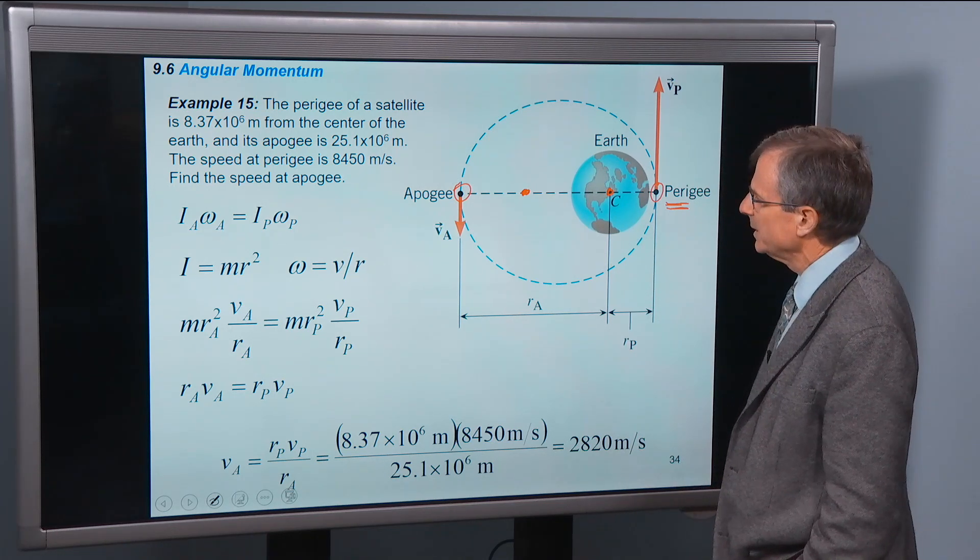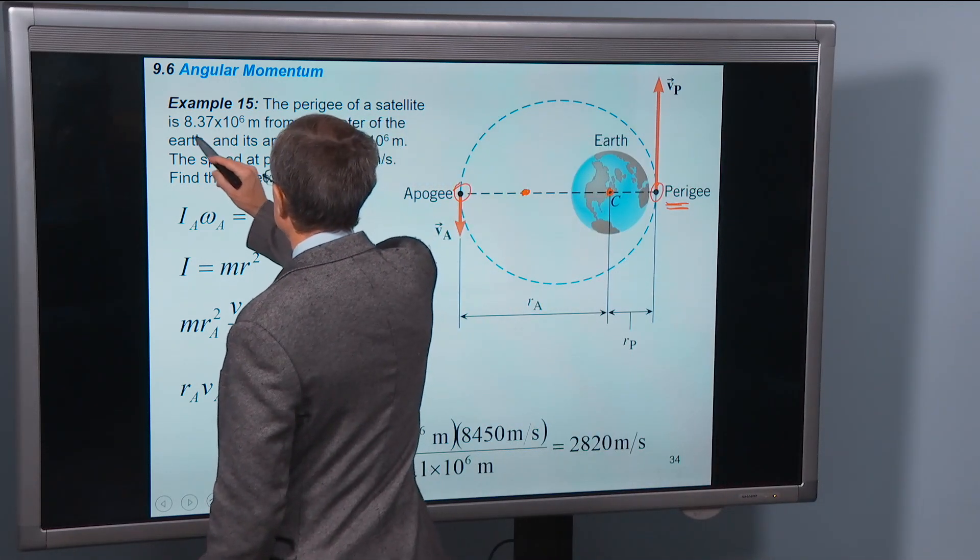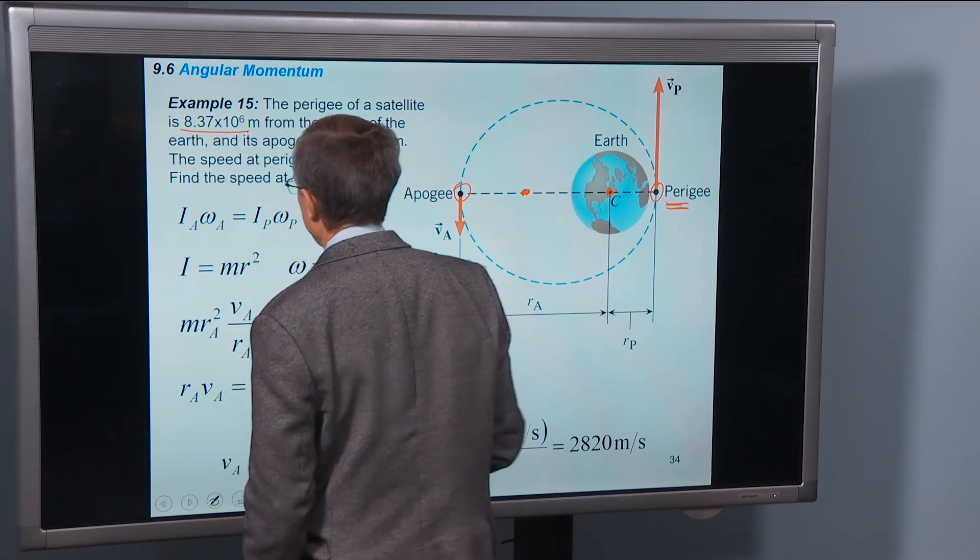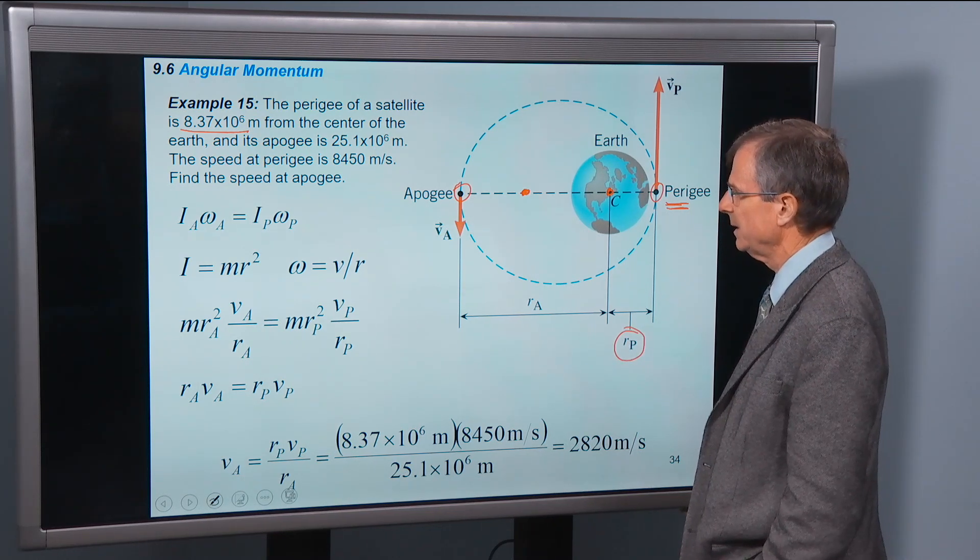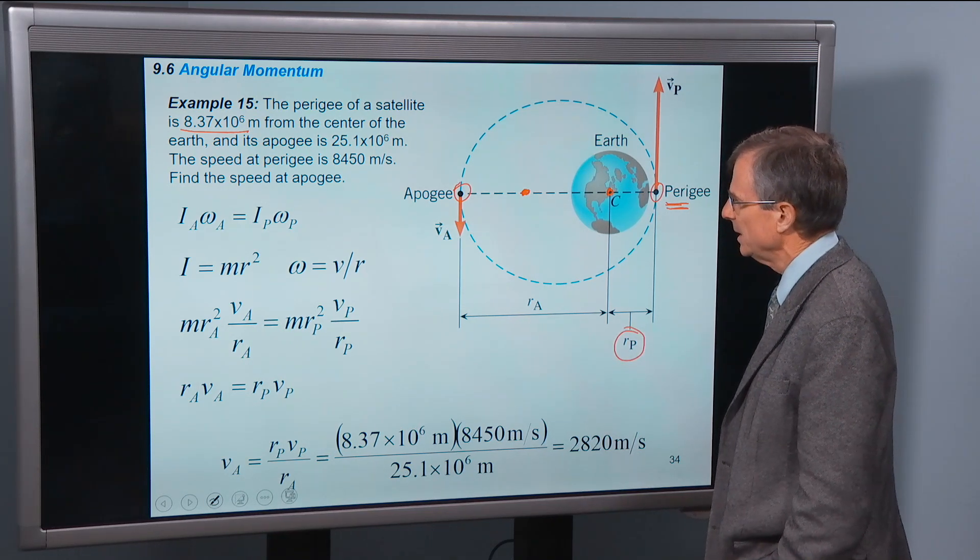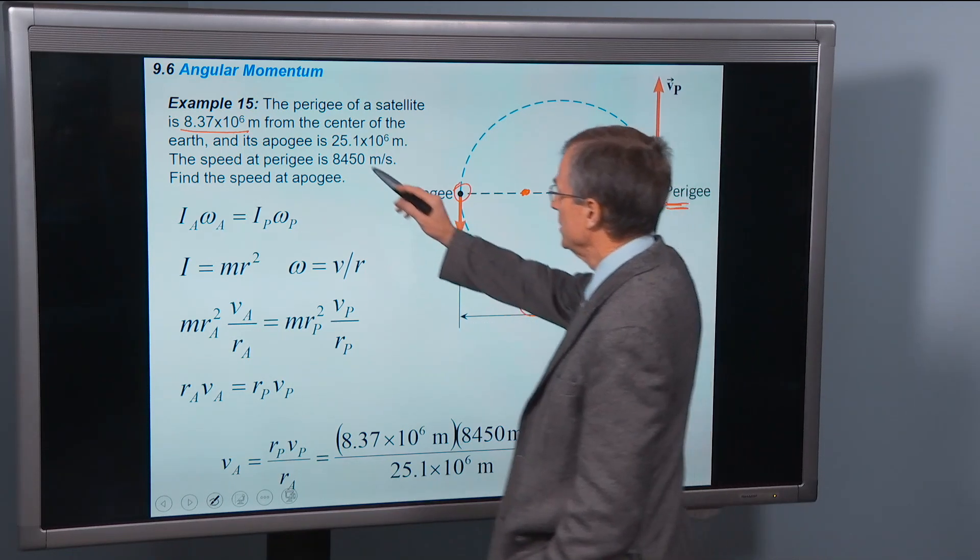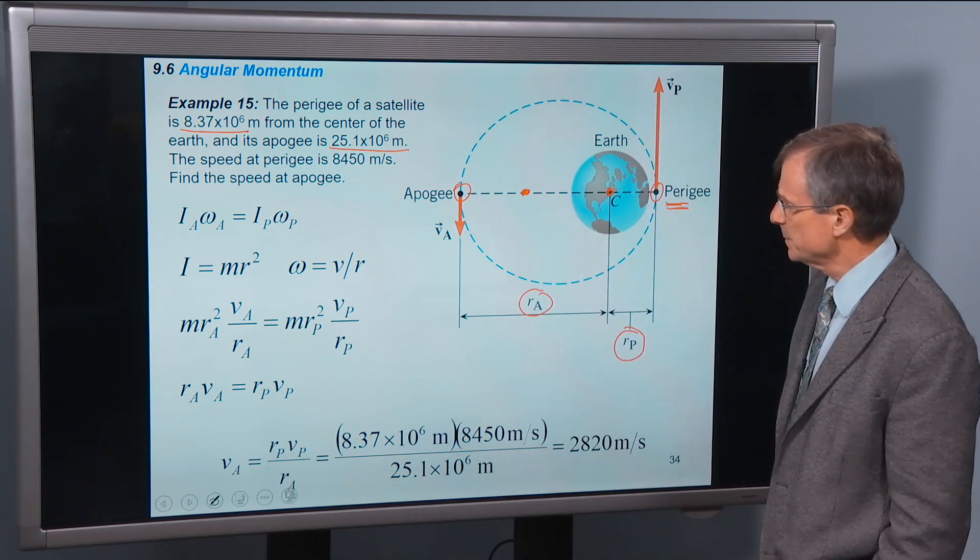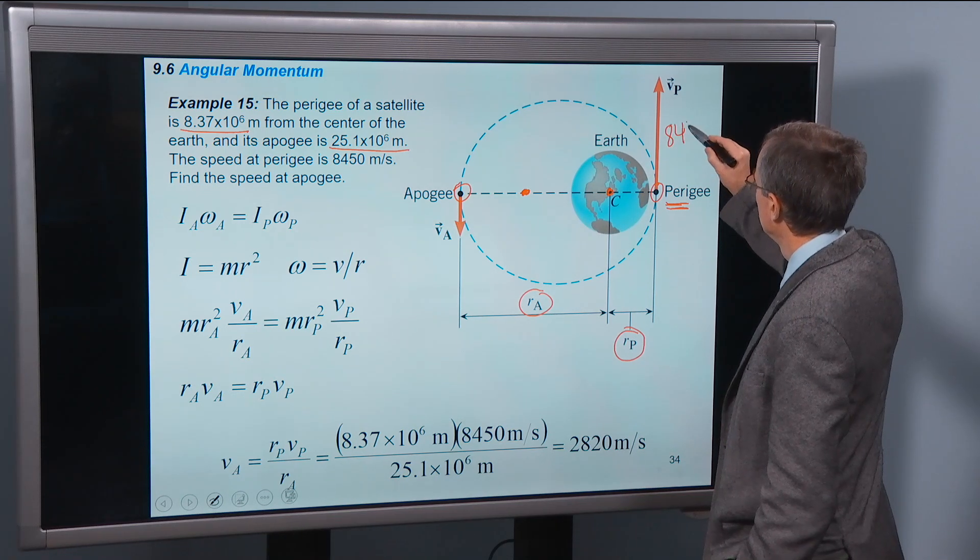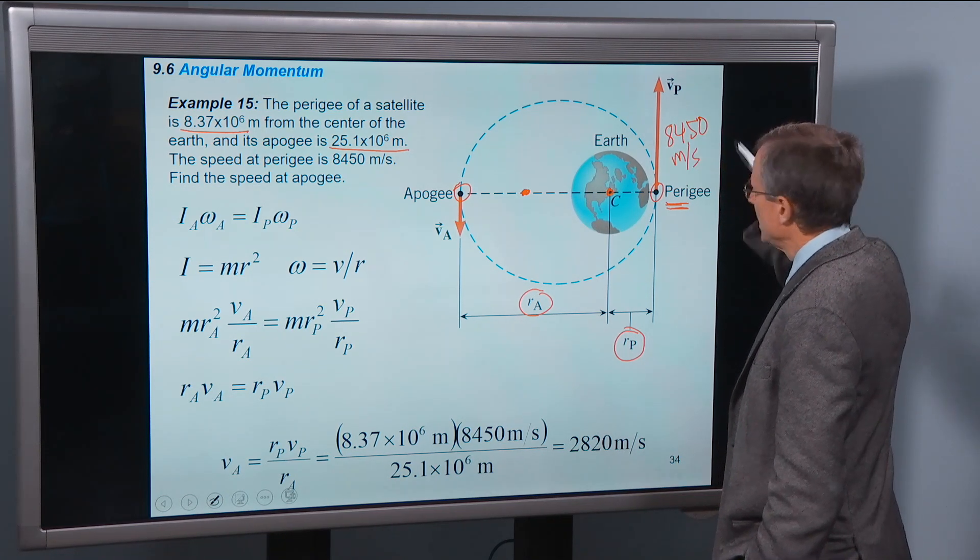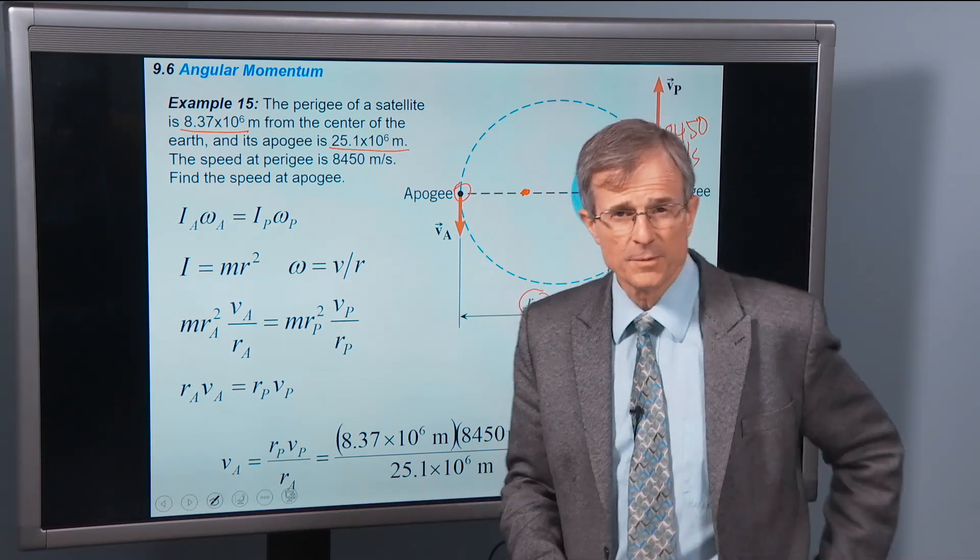So we are given that the perigee, the point of closest approach, is 8.37 times 10 to the 6 meters from the center. So that's this distance here, r_p, from the center of the earth. Its apogee, so that's the radius at the apogee, is 2.51 times 10 to the 6. The speed at the perigee is 8450 meters per second. And the question is to find the speed at the apogee. Simple problem with conservation of angular momentum.